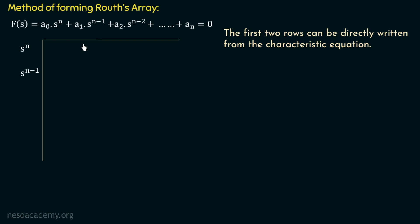The first coefficient a₀, the coefficient of sⁿ, is placed in the first row. We then fill horizontally in an alternate fashion: after a₀ we skip a₁ and place a₂, then skip a₃ and place a₄, then skip a₅ and place a₆, and so on. In this way, the first row contains the coefficients of all even powers of s.